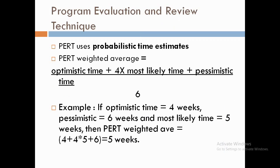The last scheduling tool is the Program Evaluation and Review Technique (PERT), which is useful when there is uncertainty regarding activity duration. It uses probabilistic time estimates — the optimistic, most likely, and pessimistic times discussed earlier — and applies a formula using these estimates to give the time to be used for a specific task when scheduling the project. For example, if the optimistic time is 4 weeks, the pessimistic time is 6 weeks, and the most likely time is 5 weeks, then the PERT weighted average by the formula is 5 weeks, which is the time that should be used when scheduling that task.